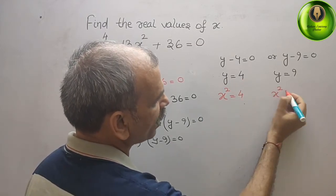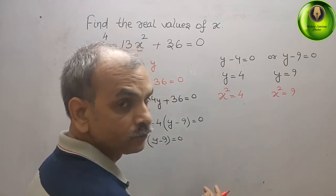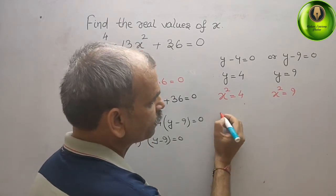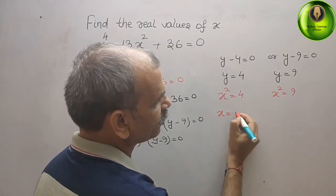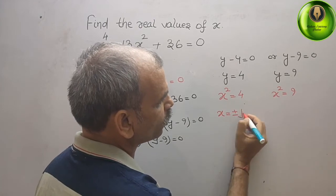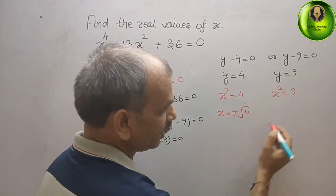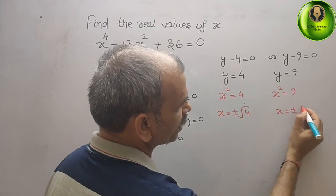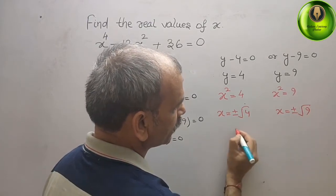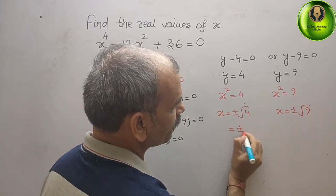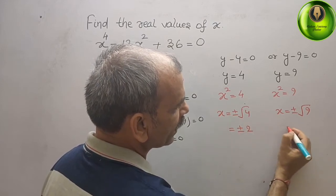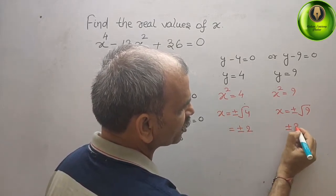Again, x square is equal to 9. So that means what is your x? x is equal to plus minus root under 4. Here also x square is equal to 9, that gives you plus and minus 2, and here you will get plus and minus 3.